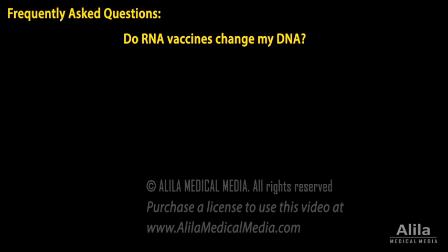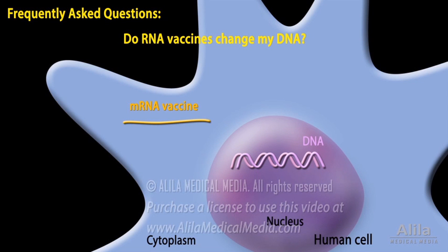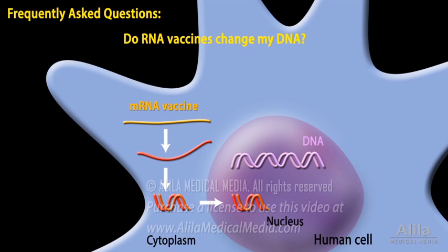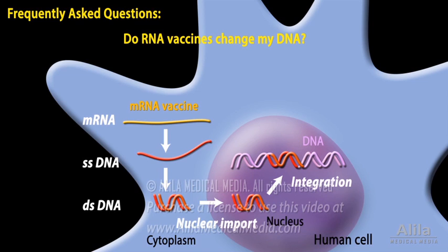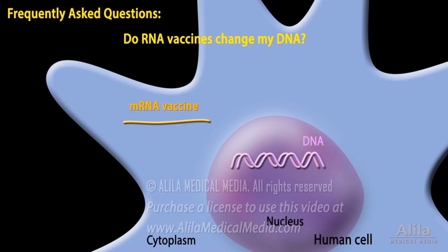RNA vaccines do not change your DNA. This is because, in order to do so, the mRNA must convert into DNA, enter the nucleus, and integrate into the cell's DNA. This is a complex, multi-step process requiring the action of several enzymes that the cell does not have. Instead, the cell has plenty of enzymes that can readily destroy the mRNA, so the mRNA is usually degraded after the protein is made.